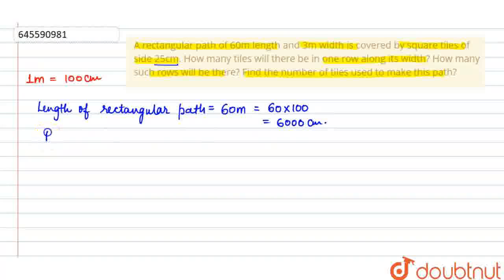Similarly, breadth or width of rectangular path. Its value is 3 meter, which means 3 into 100, which equals 300 cm.